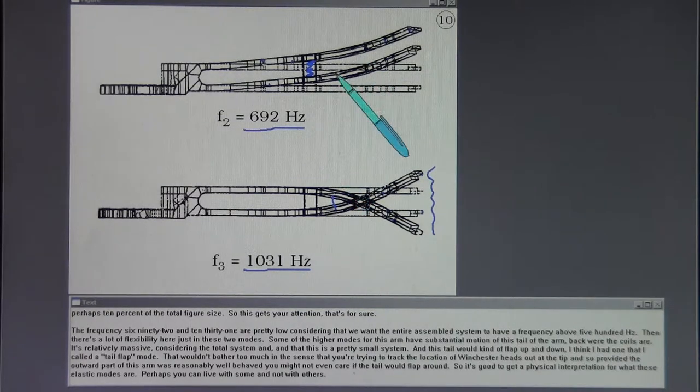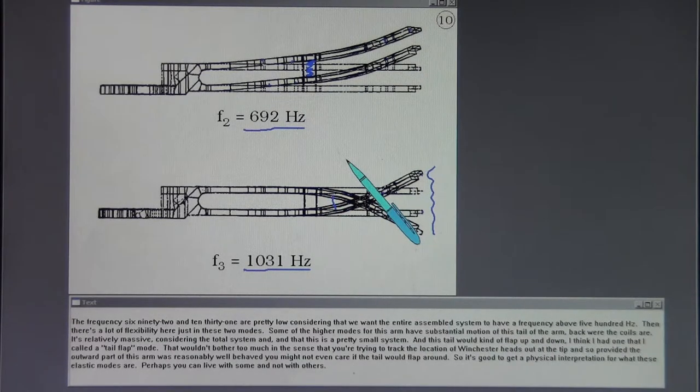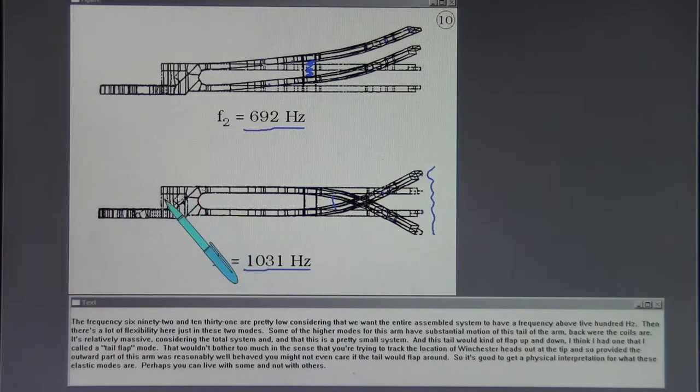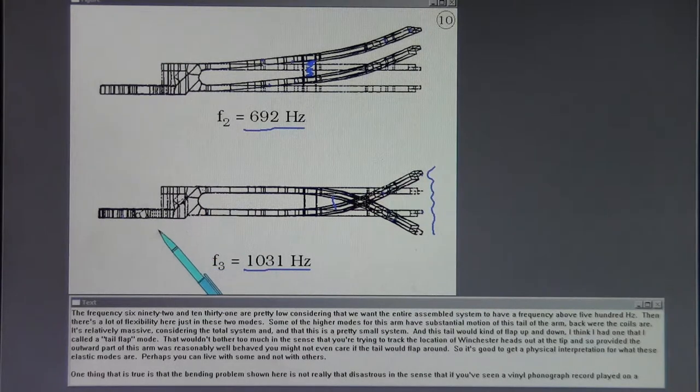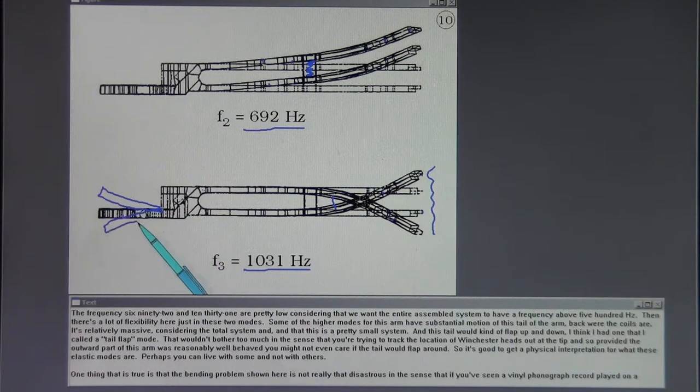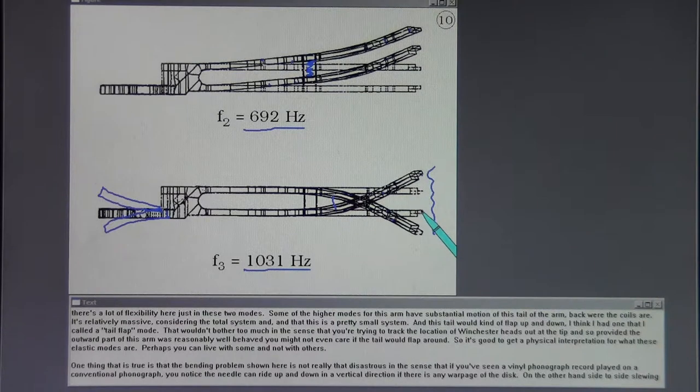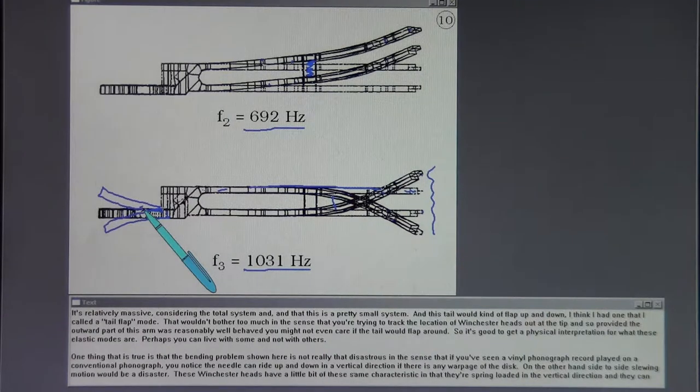The frequencies 692 and 1031 are pretty low considering that we want the entire assembled system to have a frequency above 500 hertz. Some of the higher modes for this arm have substantial motion of this tail of the arm back where the coils are. It's relatively massive considering the total system. That wouldn't bother too much in the sense that you're trying to track the location of the Winchester heads out at the tip. So provided the outward part of this arm was reasonably well behaved, you might not even care if the tail would flap around. So it's good to get a physical interpretation for what these elastic modes are. One thing that is true is that the bending problem shown here is not really that disastrous in that if you've seen a vinyl phonograph record played on a conventional phonograph, you notice the needle can ride up and down in the vertical direction. On the other hand, side to side slewing motion would be a disaster.